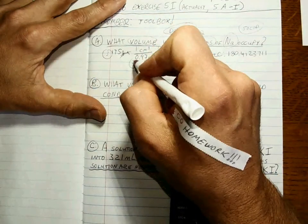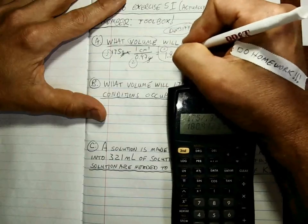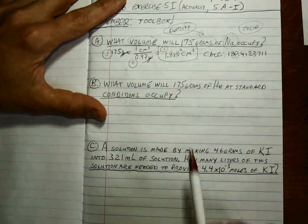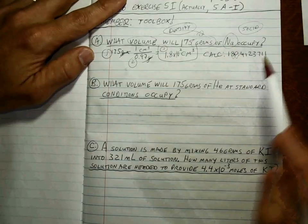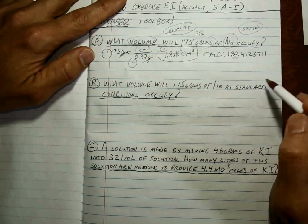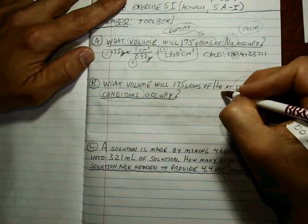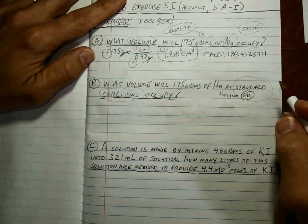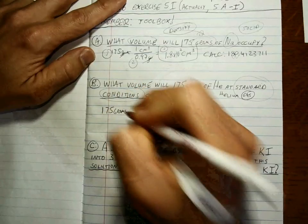So the calculator says 180.4123711. We have to write this answer to two sig figs because this has two. So how would we write that? 1.8 times 10 to the 2 positive because it's a big number, cubic centimeters. All right, we're done with that one. Now do you see how similar these two problems are in terms of the wording? What volume will this amount of this stuff occupy? You can see where those two can be confusing. How do you unconfuse yourself? By recognizing what standard conditions means. Standard conditions, and that's helium. Helium is always a gas at normal temperatures, at standard conditions for sure.